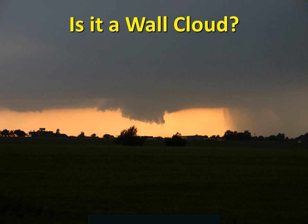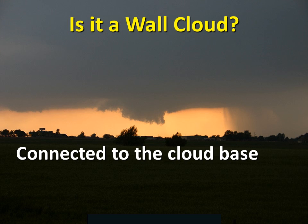There are lots of clouds that can look a lot like a wall cloud, and it can be confusing for spotters to tell the difference between scary-looking clouds and the real thing. If you're having trouble deciding whether it's a wall cloud or not, ask yourself these three questions. Is it connected to the base of the storm? Wall clouds are a lowered part of the cloud base, and they will always be connected. If it's not connected, it may just be scud clouds.